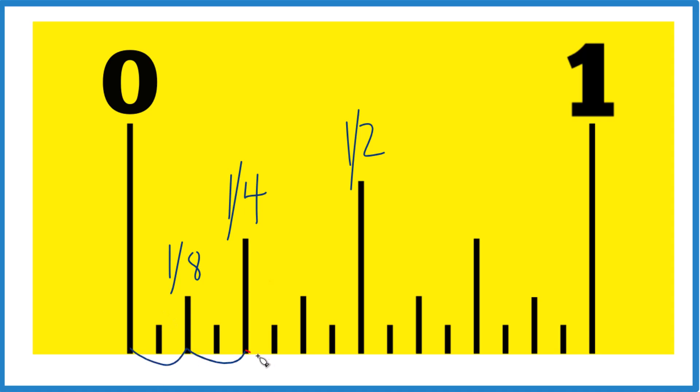If you keep going: four eighths, which is just one half, five eighths, six eighths, that's three fourths, seven eighths, and then eight eighths. Eight divided by eight, that gives you a one there.